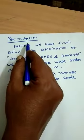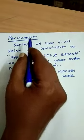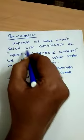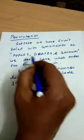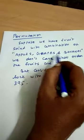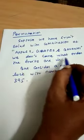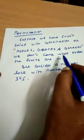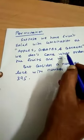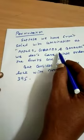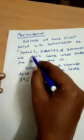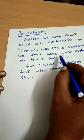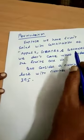Permutation. Now we are going to see permutation. Suppose we have a fruit salad with a combination of apples, grapes, and bananas. We don't care what order the fruits are in. We can first apply grapes or first apply apples — anything. But we have the fruits of it.